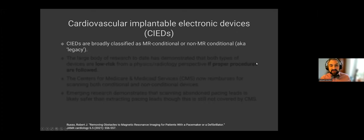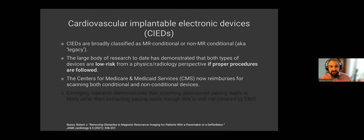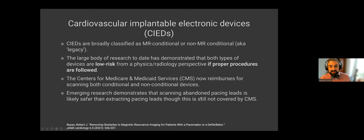So these devices are broadly classified as MR conditional or non-MR conditional, which we sometimes call legacy devices. And the large body of research to date has actually demonstrated that both types of devices are low risk from a physics radiology perspective, if you take proper precautions. That is key. You have to certainly do certain things when you scan them, but they can be scanned low risk. And so it's so accepted now that in the United States here, we get reimbursed for both conditional and non-conditional devices.